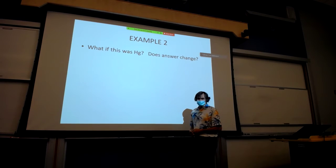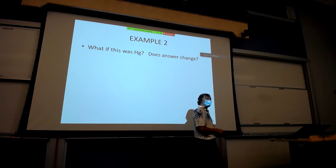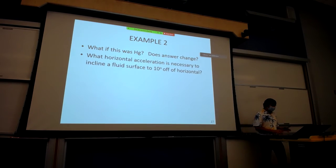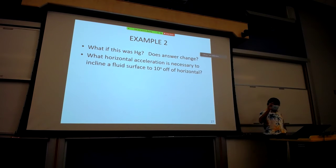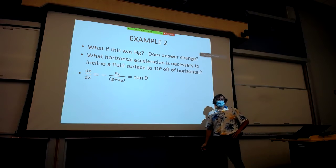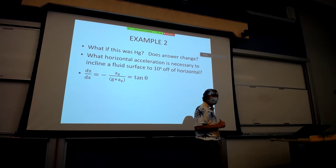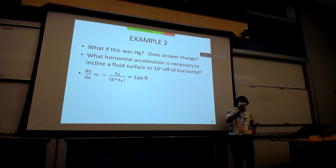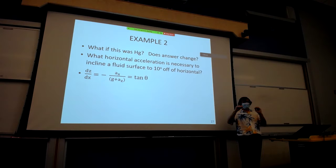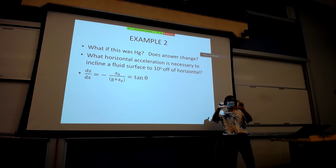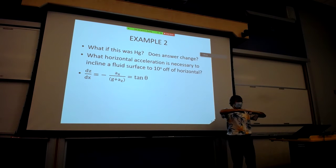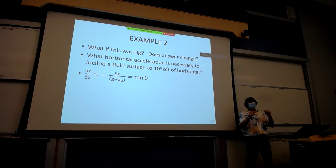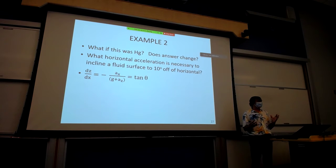What if the container was filled with mercury instead of water? Does the answer change? Go back to the slope equation — where are the fluid characteristics of mercury in that equation? Nowhere. You get the same inclination irrespective of the fluid. The difference appears in the unsteady state: water may reach the steady slope much faster than mercury because of viscosity. But the steady-state system depends only on the acceleration field.